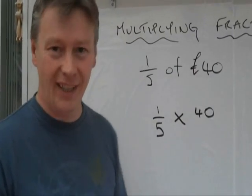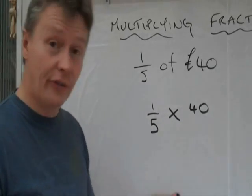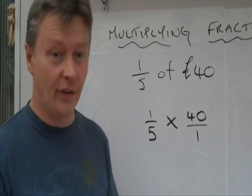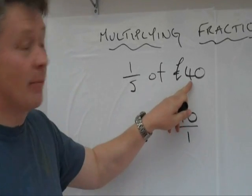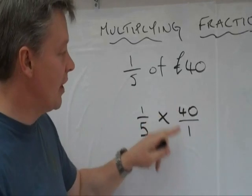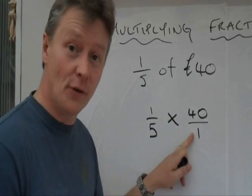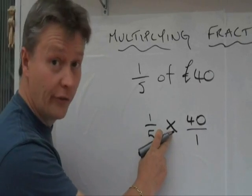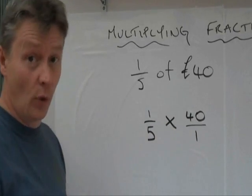But just because it's really easy, if you do it for a fraction, is to also put a denominator of one underneath it. That means exactly the same as 40, because 40 divided by 1 is 40. Now, so the question is one-fifth of, or one-fifth times 40 over 1.